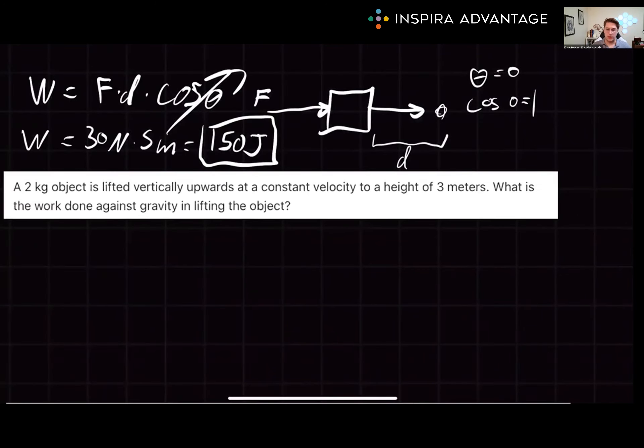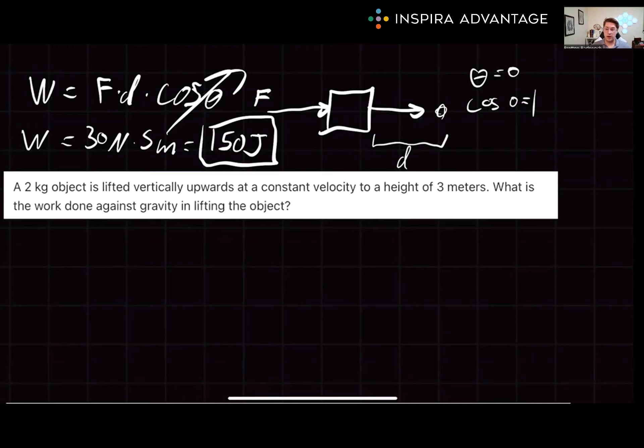Let's move on to the next one. Take it up a notch. A 2-kilogram object is lifted vertically upwards at a constant velocity to a height of 3 meters. What is the work done against gravity in lifting the object? Pause and see if you can solve this one.